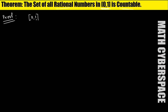In the closed interval [0,1], how can we arrange the elements or the rational numbers in this set? First of all, we write the first element, which is zero, and the second element, one. Now the process is: we will increase the denominator. So this will be one-half. Next, we increase the numerator until the numerator and the denominator are equal. So the next number would be two-by-two, but since two-by-two equals one, I am deleting this term.